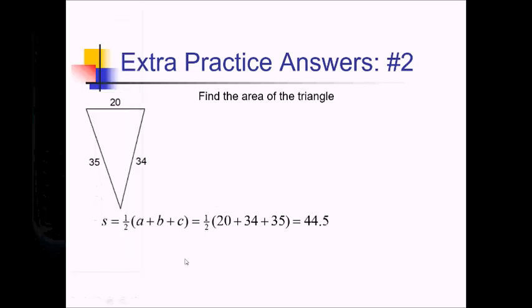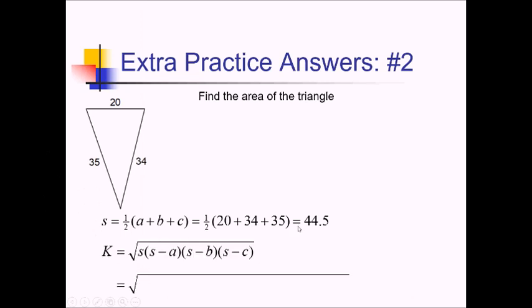And now I need to plug that into the K formula part of this. That's the square root with all the S's and sides in it. So we have the square root of 44.5 for S. And then 44.5 minus 20, minus 34, and minus 35.